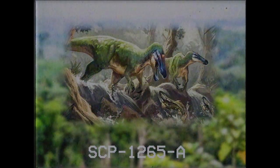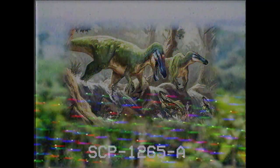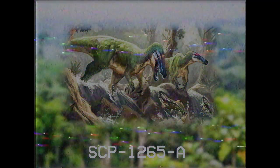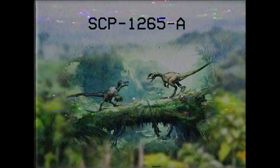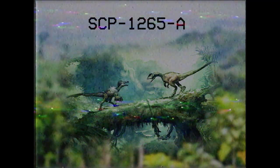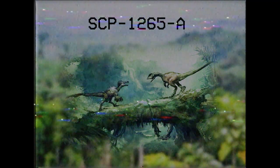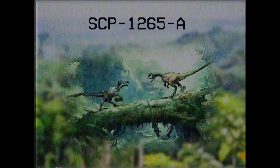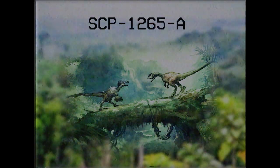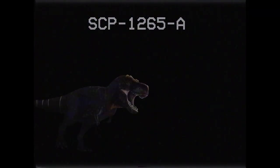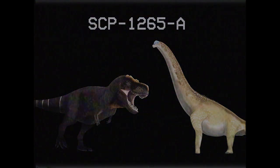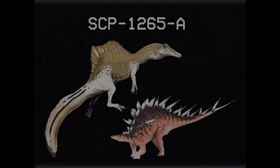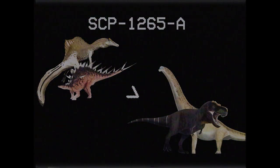Gran parte de ellos no se encuentran en el registro fósil dentro de África; en cambio, parece que se encuentran en África debido al clima al que vivieron durante la Era Mesozoica, que es bastante similar. Hay pocas especies de dinosaurios carnívoros o herbívoros grandes presentes como casos de SCP-1265-A, y es particular la ausencia de especies cuyos fósiles se hayan encontrado en América del Norte. Especies como Tyrannosaurus rex y Brachiosaurus nunca se han visto en SCP-1265.